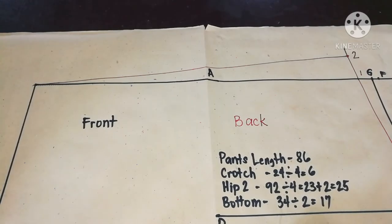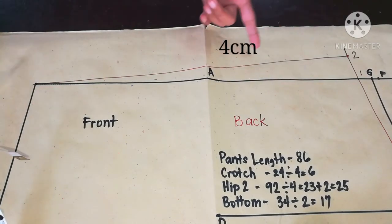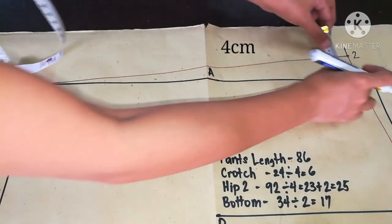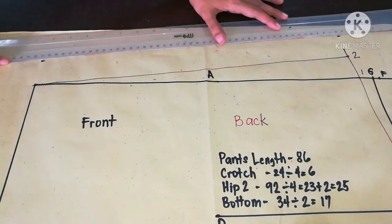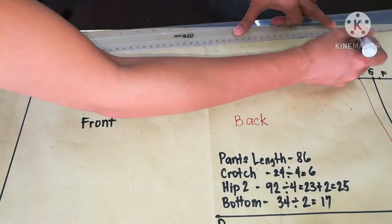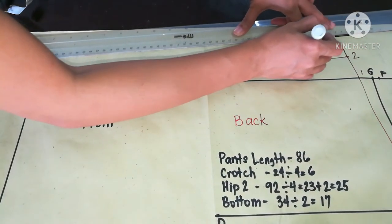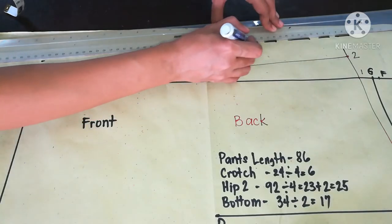For the waist, measure 4 centimeters. Allowance for the waist will depend on the garter that you will use. This allowance is good for one inch width of garter.